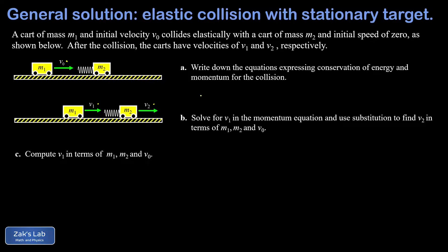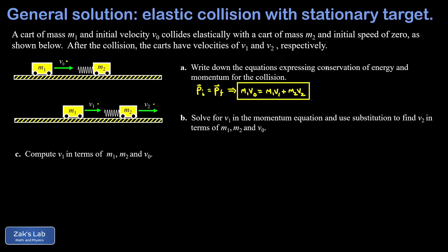The first question is to write down the equations expressing conservation of energy and momentum for the collision. Starting with the momentum equation: p_initial equals p_final, keeping in mind these are vector quantities. The initial momentum is just m1*v_naught, with no contribution from m2 since it's stationary, and the final momentum is m1*v1 plus m2*v2.